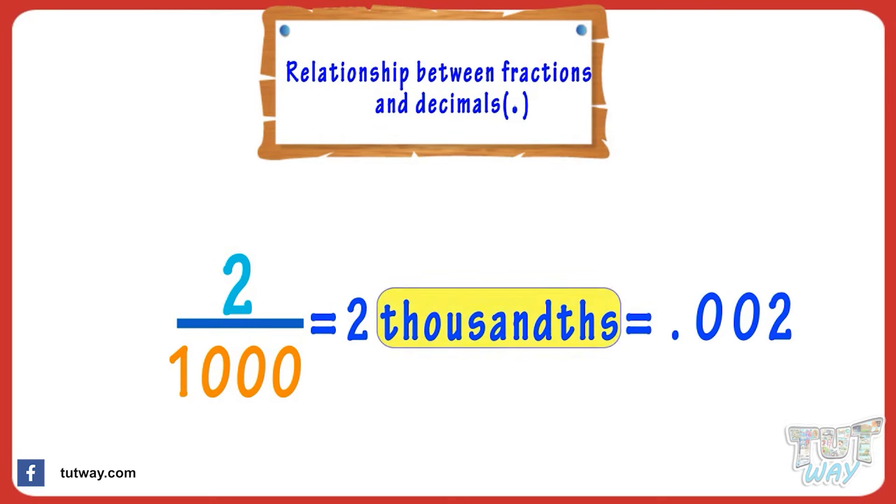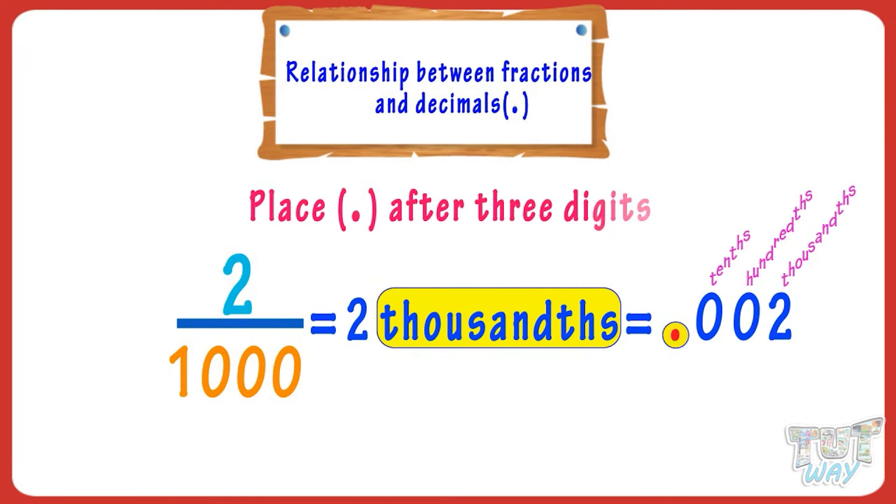When it's thousandths, you have to place the decimal after three digits from the right. Zeros hold the rightmost places if there are fewer than three digits.